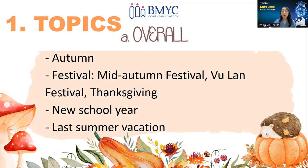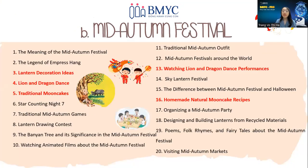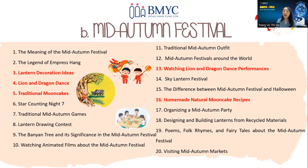If you still don't know what to do, I will show you the list of topics. This is about number two, the mid-autumn festival. There are many topics to choose from. If you want to talk about lanterns, you can choose number three: lantern decoration ideas. I have an interesting idea — you can make your own lantern and then present your idea for making it. It's very interesting to have something to do and talk about.